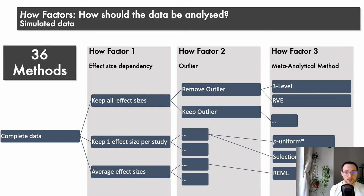Okay. Secondly, we have to decide on the how factors, that is, which statistical and meta-analytical methods could we use to analyze our data. And here again, we could have three different factors that are interesting to us. The first one, how we handle effect size dependency. So when we have multiple effect sizes per study, what are we going to do with this? Are we going to keep all of those effect sizes? Or are we going to keep only one effect size per study based on some criterion? Or are we going to average those effect sizes? Those can all be valid methods but lead to different paths that could be taken.